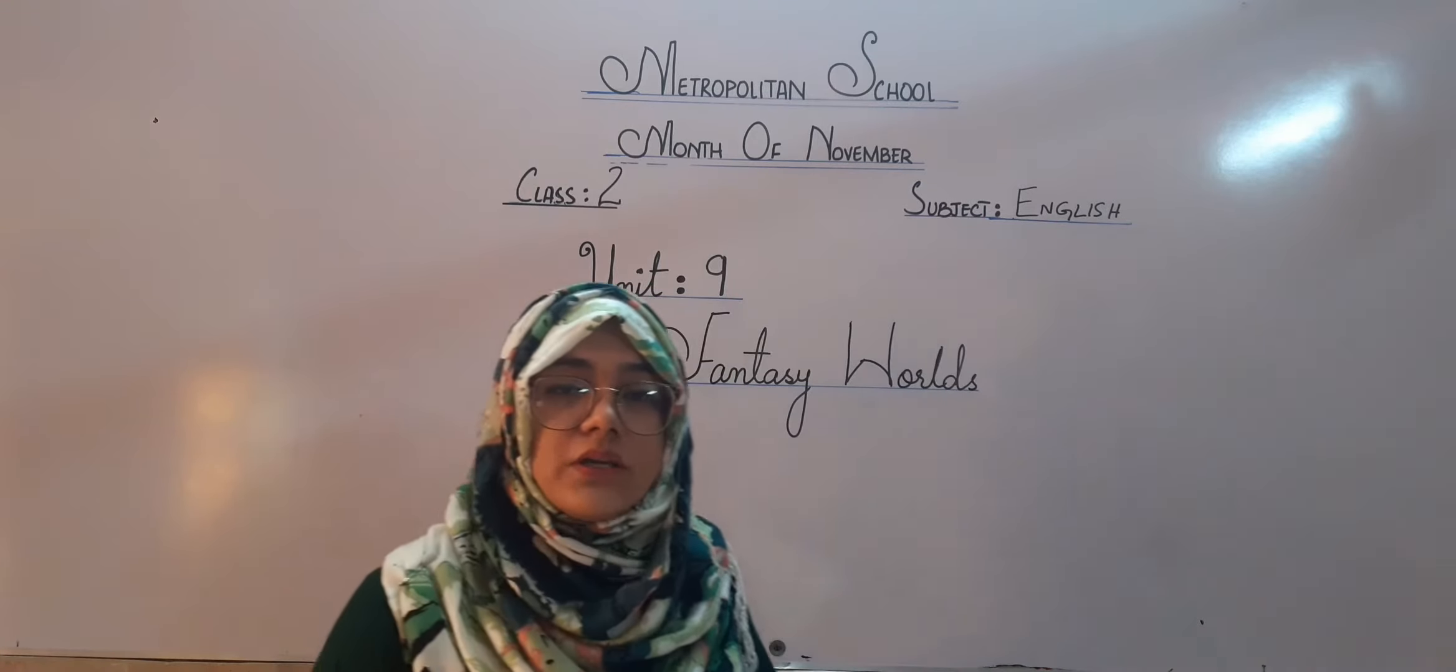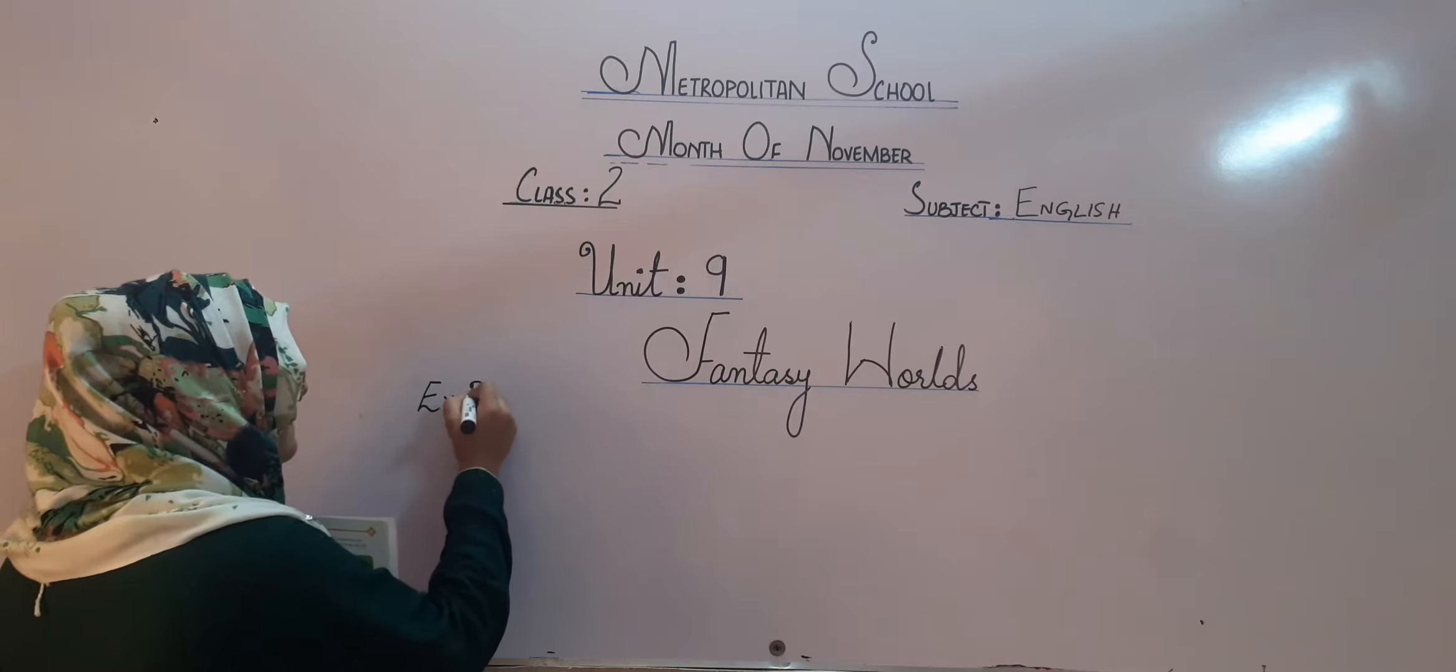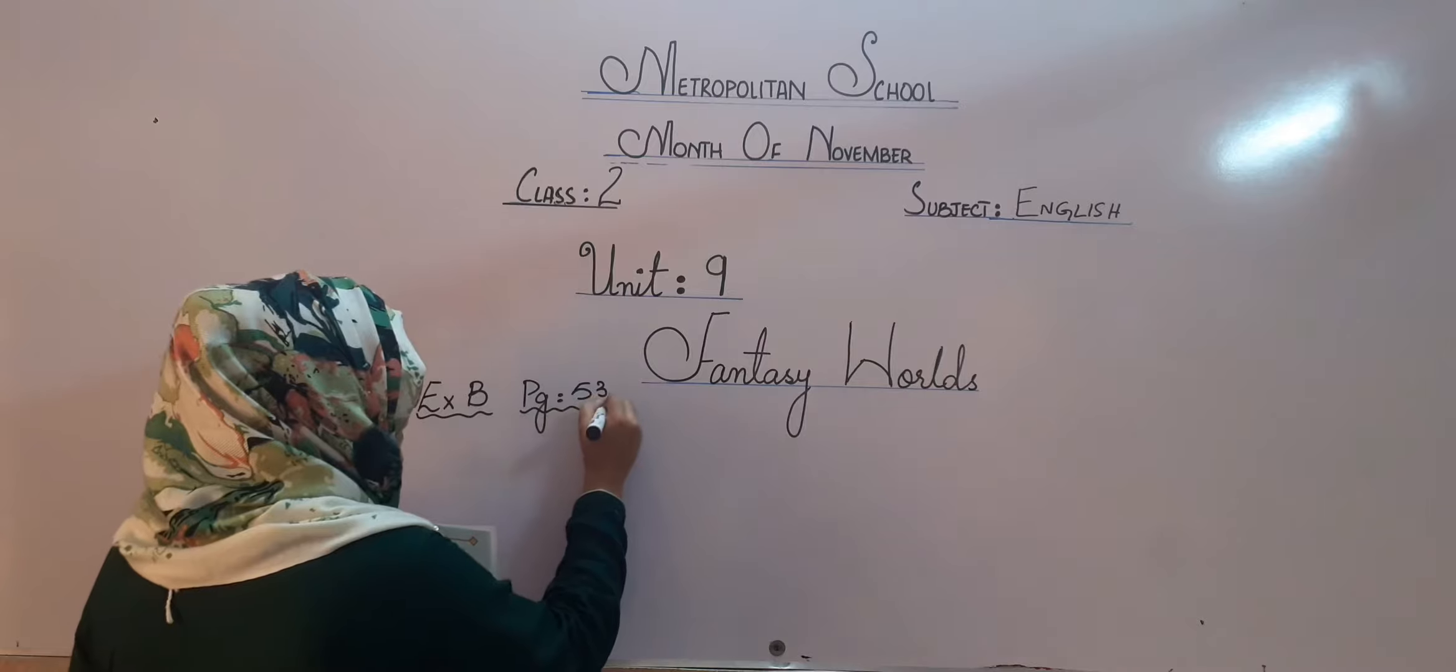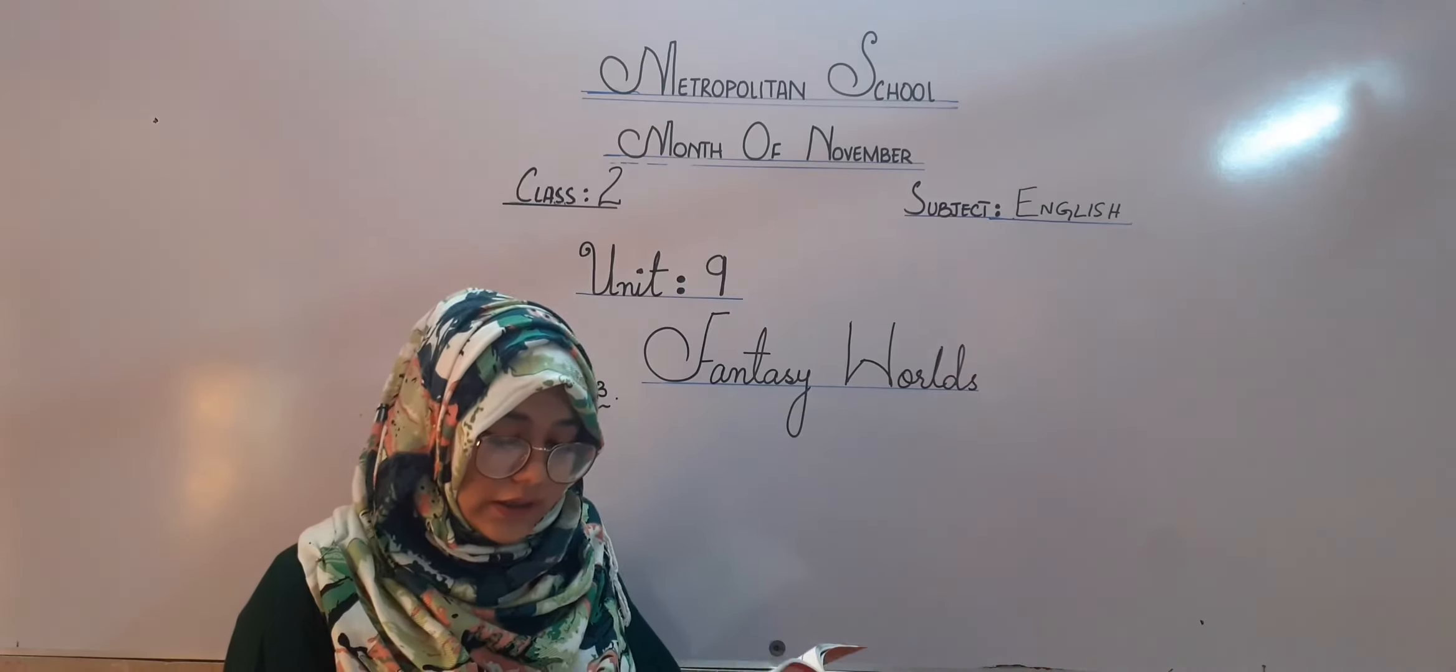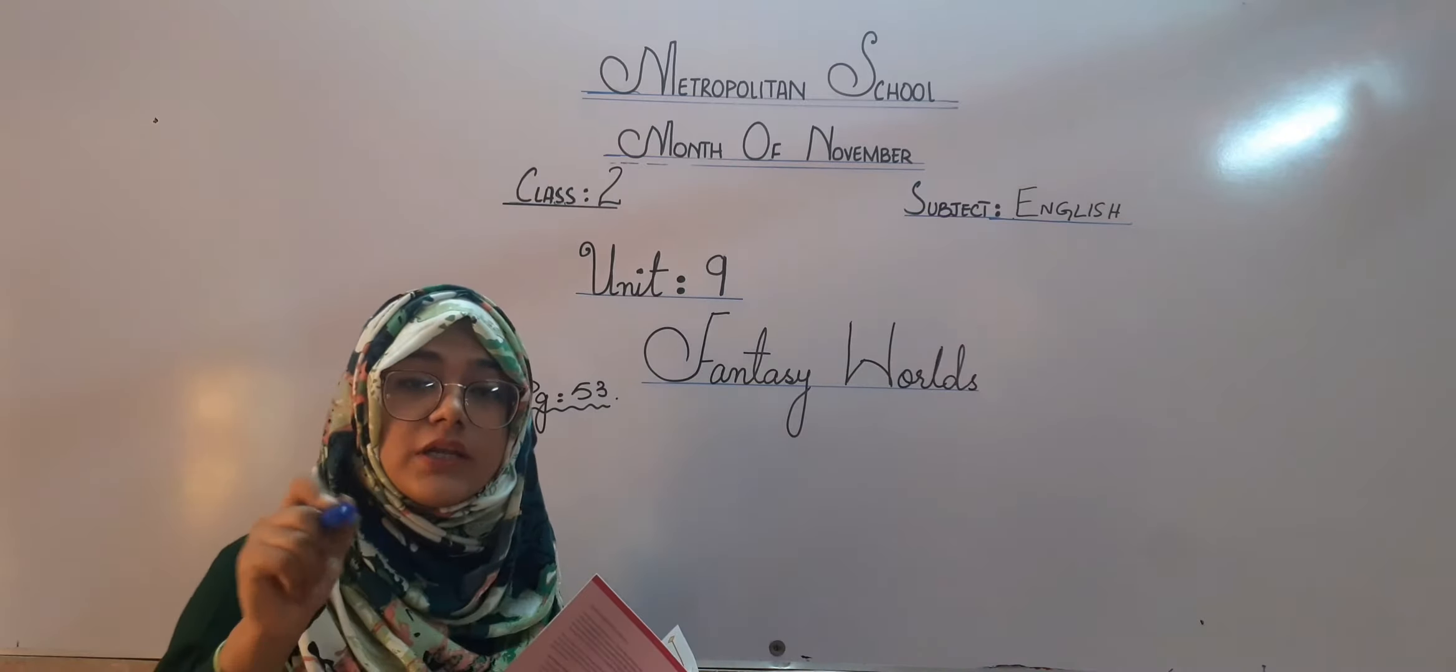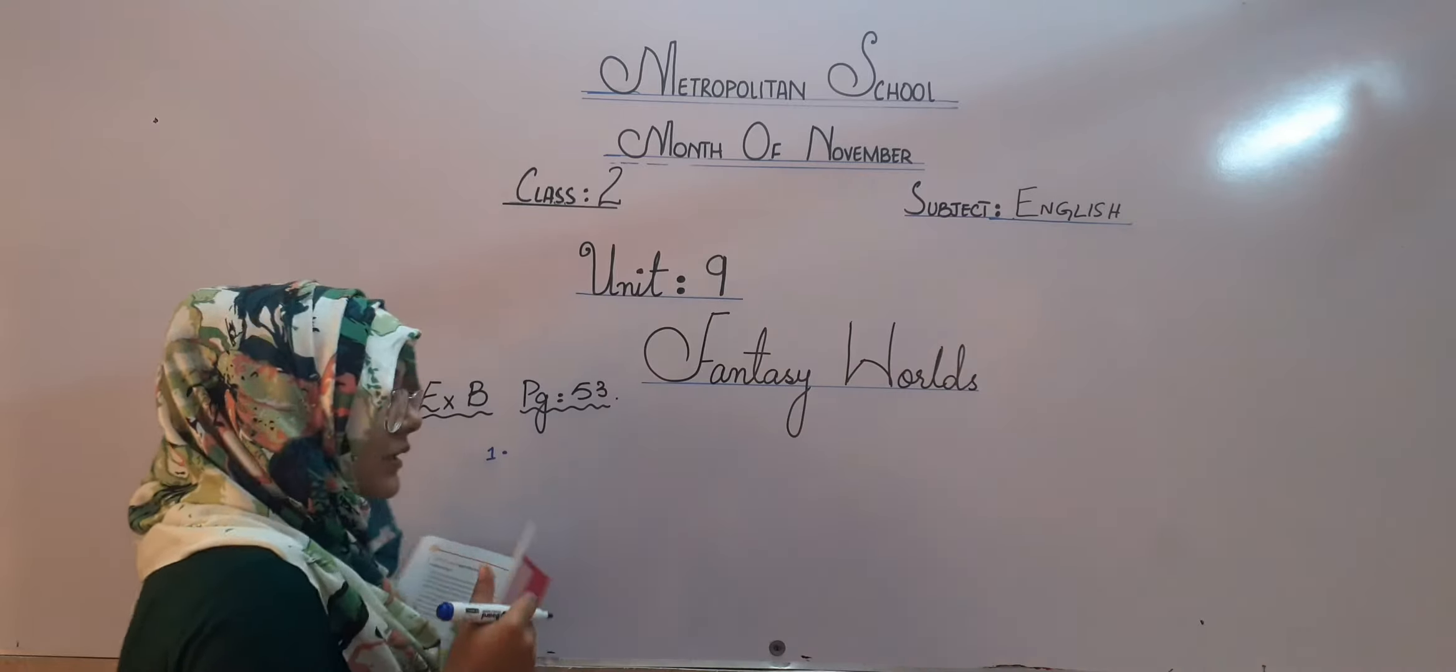Now, my dear students, we are going to start with the exercise of this chapter which is on page number 53 and the exercise is exercise B on page number 53. As we have read the chapter dear students, now we are going to circle the words which are in the box and I am going to write the right answer which you have to circle in your book. Keep the pencils in your hand.